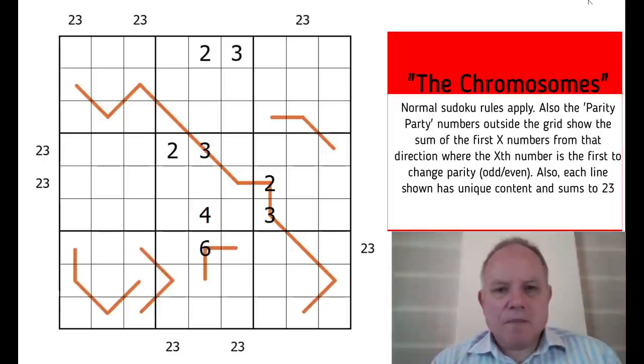Now as I said, this is a concept I think that Philip Bloom has developed called parity party, and in this the numbers outside the grid represent the sum of the digits seen from that point until the first time that parity, which means being odd or even, changes, and including that time. So for instance, this 23 could be 6, 8, 9. That's possible, that adds up to 23, and it's even, even, and then the first odd would make it 6, 8, 9, and that would be 23.